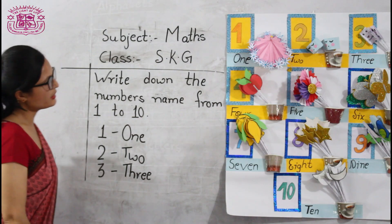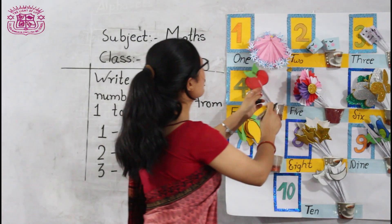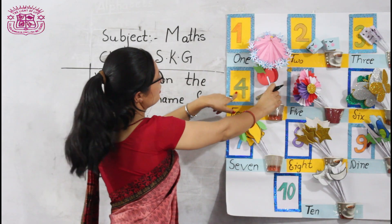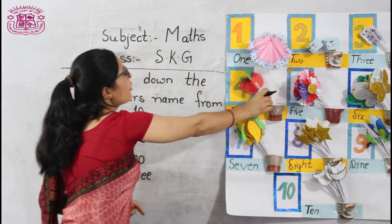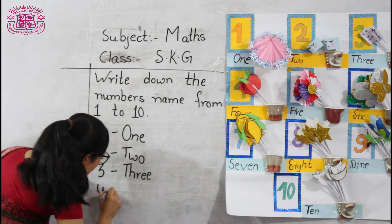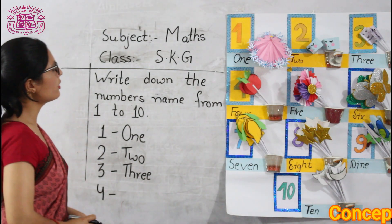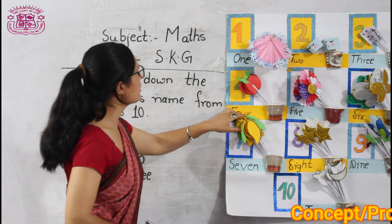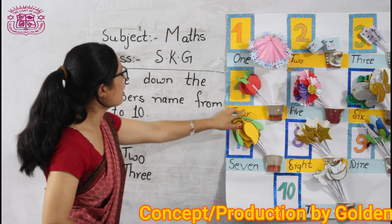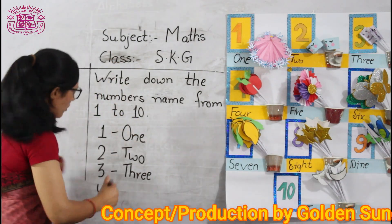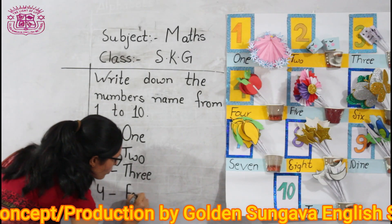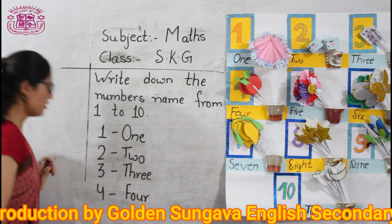What comes after 3? Look here. What comes after 3? 4. Okay, here is 4. What is the spelling of 4? F-O-U-R. 4.